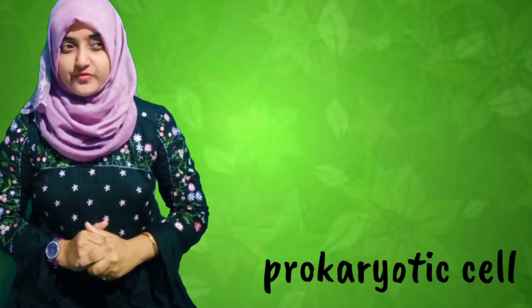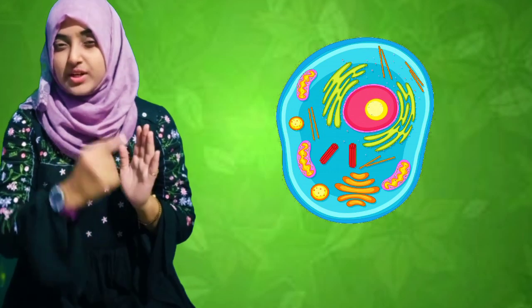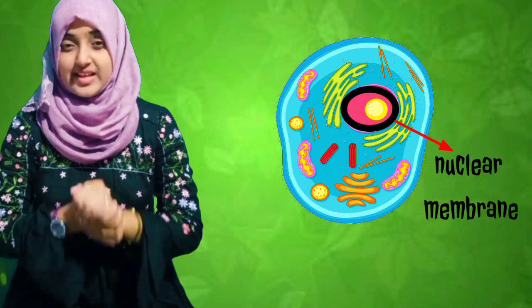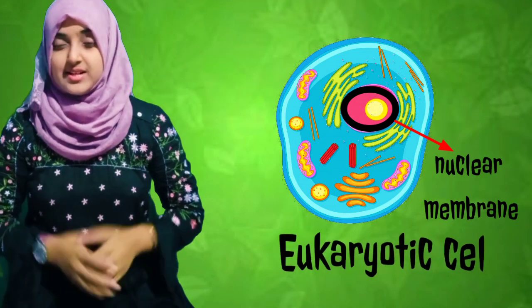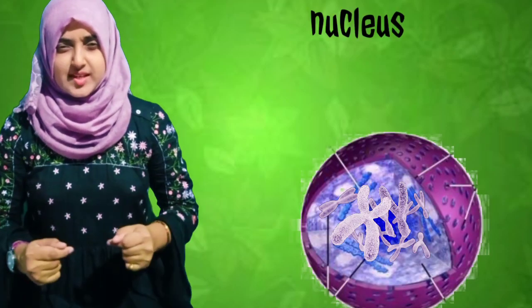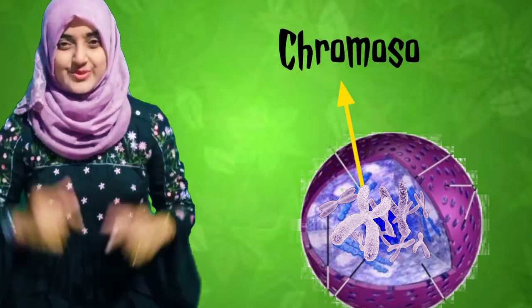Certain cells do not have a nuclear membrane surrounding the nucleus. Such cells are called prokaryotic cells — for example, bacteria. We animals, plants, and all other organisms have a proper nuclear membrane surrounding the nucleus of our cells, and hence our cells are called eukaryotic cells.